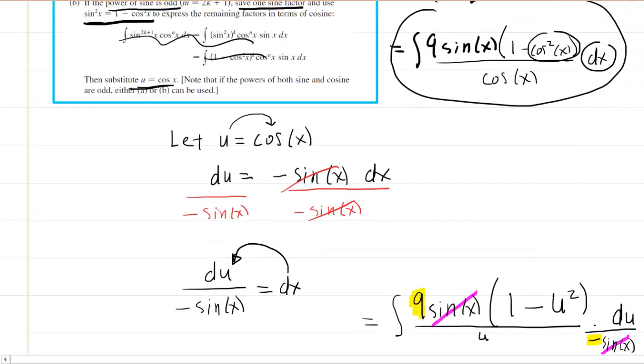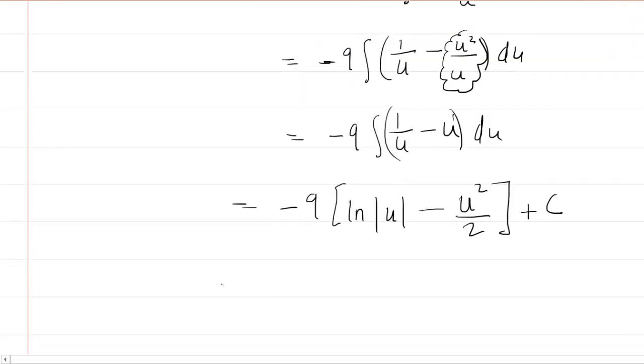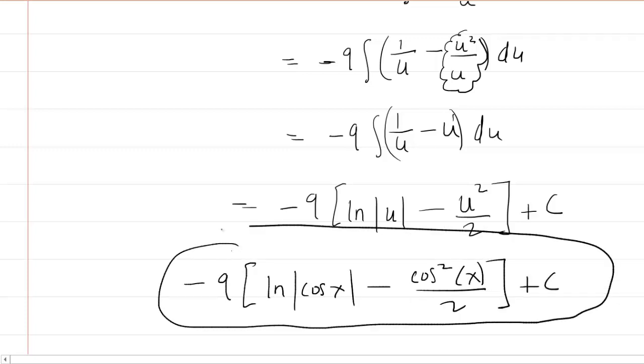And also, let's not forget that u was equal to the cos(x). So you actually have to go back and replace the u with the cos(x) in order to finish off the problem. For u², you'll end up with cos²(x). And this, indeed, is the correct answer to the question. Thank you.